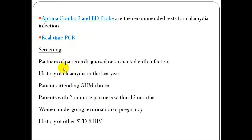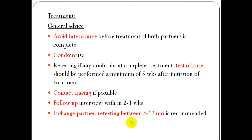Screening is done for: partners of patients diagnosed or suspected with infection, history of chlamydia in the last year, patients attending genitourinary medicine clinics, patients with 2 or more partners within 12 months, those undergoing termination of pregnancy, and patients with history of other sexually transmitted diseases and HIV.